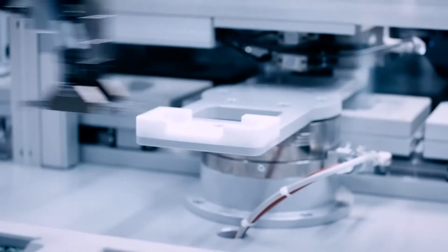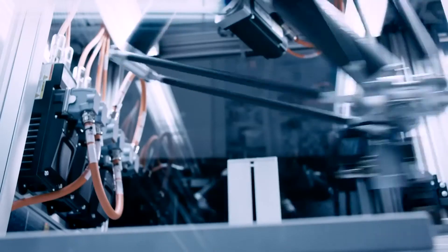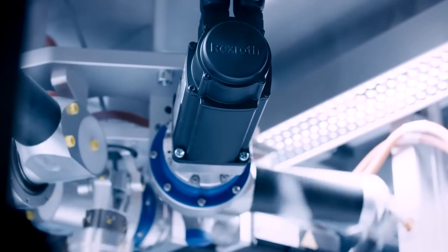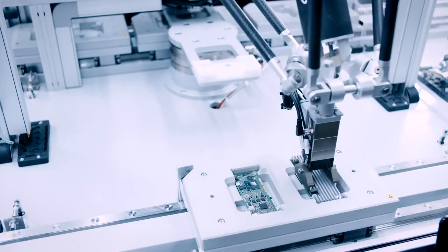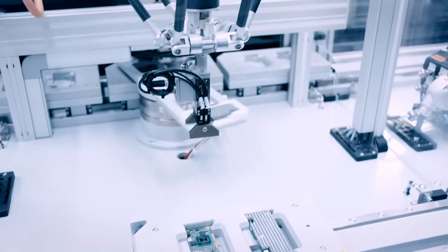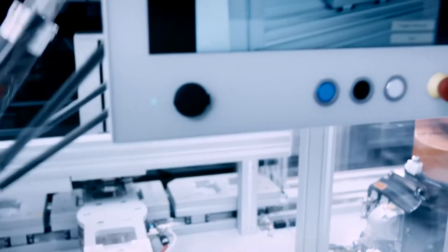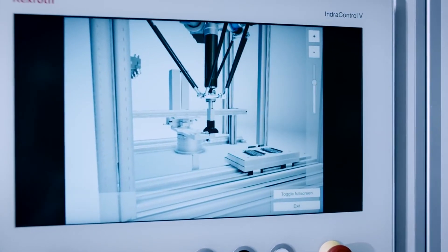Here, a Delta robot places a cooling element on the conductor board. Rexroth already fully relies on model-based engineering during machine development. Because of this, users can virtually test and optimize all relevant production processes in advance.